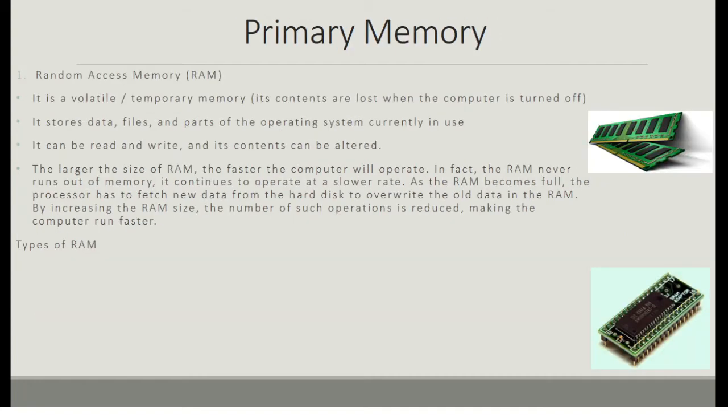Types of primary storage. Random Access Memory or RAM is a volatile or temporary memory, so its contents are lost when the computer is turned off. It stores data, files, and parts of the operating system currently in use. It can read and write, and its contents can be altered. The larger the size of the RAM, the faster the computer will operate.